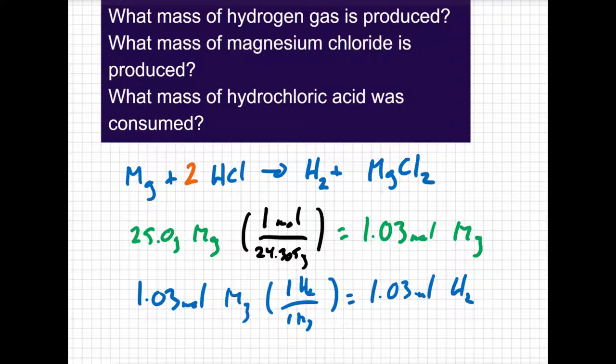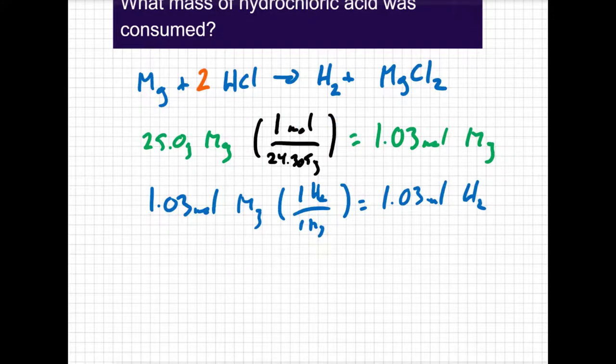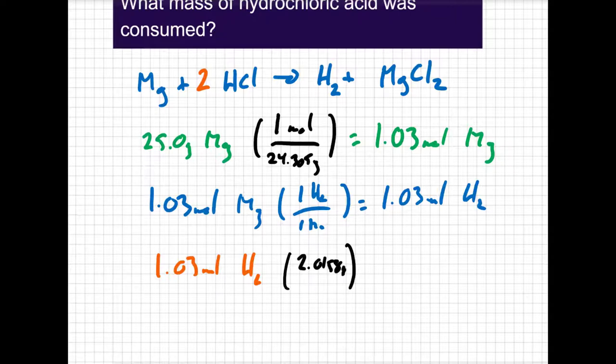So that's step three, using the ratios from the equation to predict the moles of product. Now I've got to convert that to grams. I have 1.03 moles of hydrogen gas. Remember, hydrogen's diatomic, so I have to take the molar mass of hydrogen, 1.0079, and multiply by two, so there are 2.0158 grams for every one mole of hydrogen gas. So that means I have 2.07 grams of hydrogen gas when I'm done.